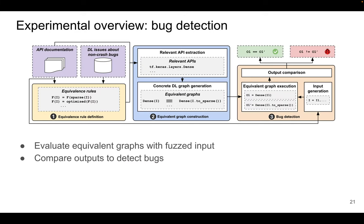In the third and final step, we generate fuzzed input using constraints extracted from documentation and feed the inputs to equivalent graphs. At last, we compare the outputs of equivalent graphs and check if there are inconsistencies.